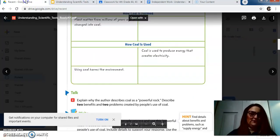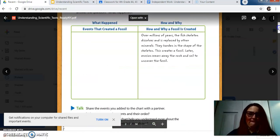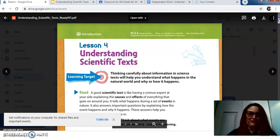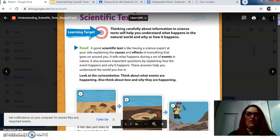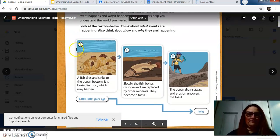So you're going to look at the cartoon on page 52, on the first page of your text today. Make sure you guys are also reading through the text, actually reading whatever is written on the page. It's all important information. So it says, look at the cartoon below. Think about what events are happening. And also think about how and why they are happening. So you can see this, it says event one. This is a perfect example of sequencing, right? So it's saying one, two, three, the order in which things happen.